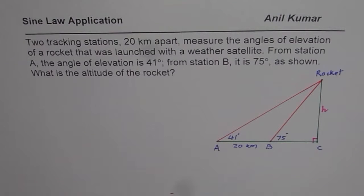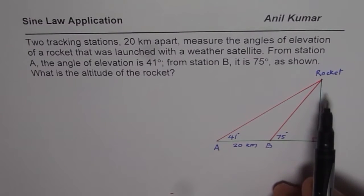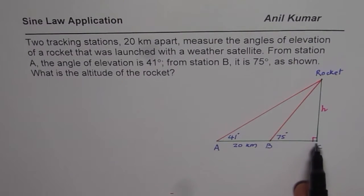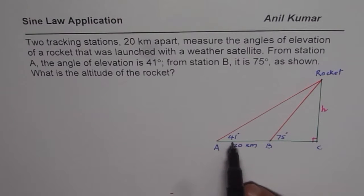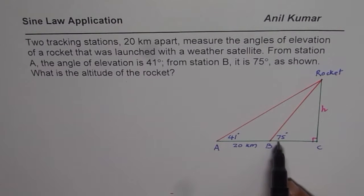What is the altitude of the rocket? So we are given the figure here, that is the rocket, R let us say, we need to find the height so h represents the altitude of the rocket. These are the two stations, angle of elevation being 41 and 75 respectively.